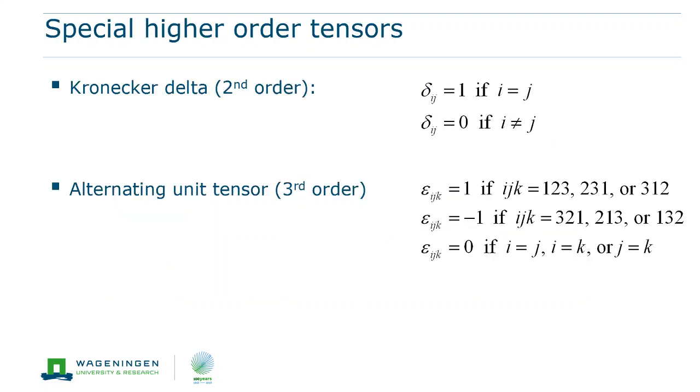In fact, the alternating tensor is one of two special tensors. The first one is the Kronecker delta. It's a second order tensor for which the components are only equal to 1 if the indices i and j are equal.